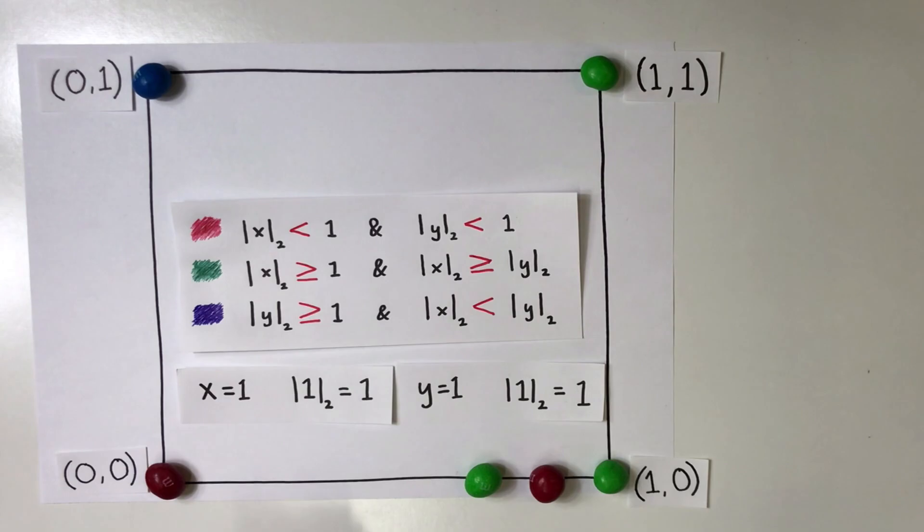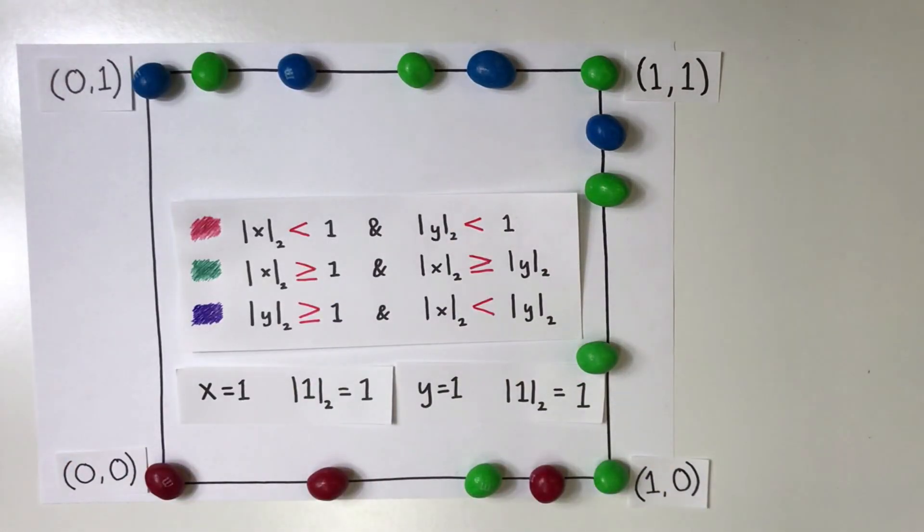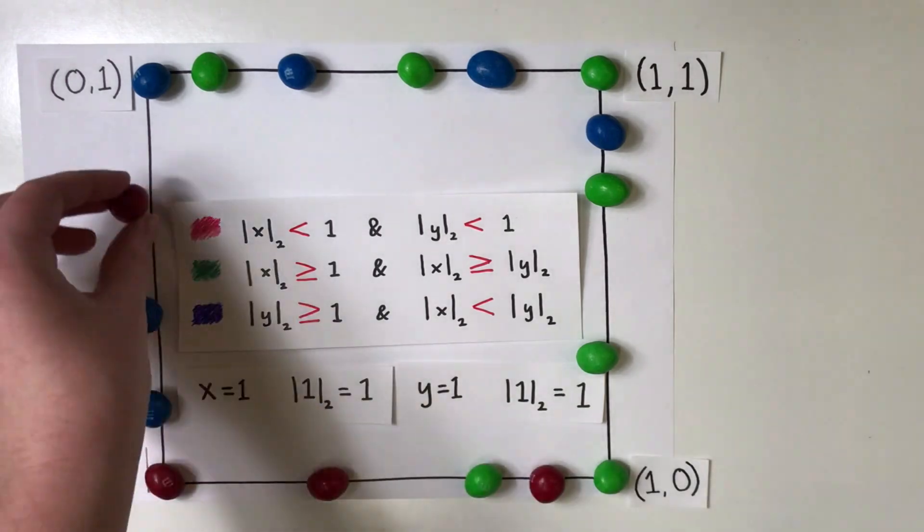Note that the bottom edge only contains the red and green vertices. The left edge only contains red or blue vertices, and the right and top edges only contain green or blue vertices.